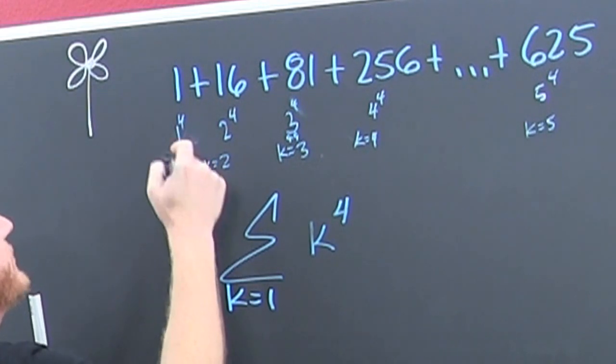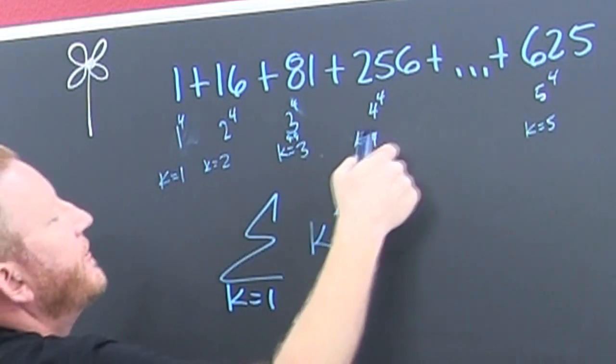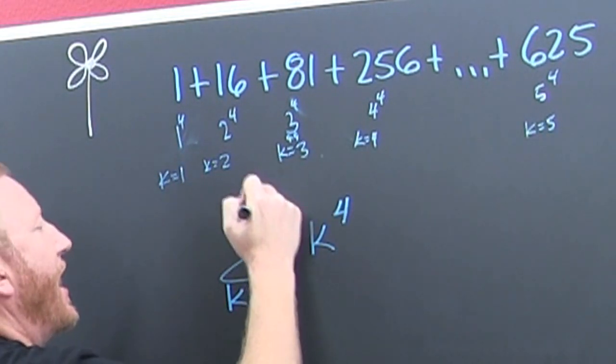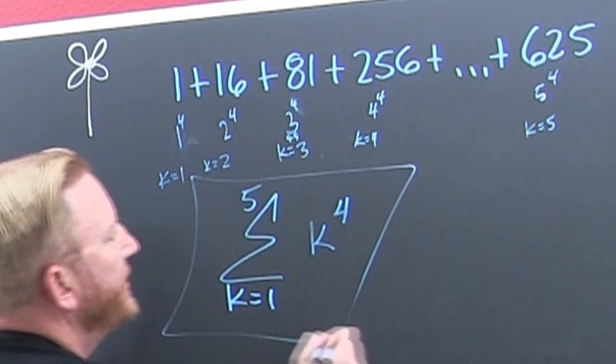And how many terms do we have? This is K is equal to 1, 2, 3, 4, 5.